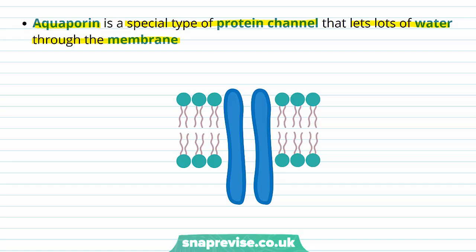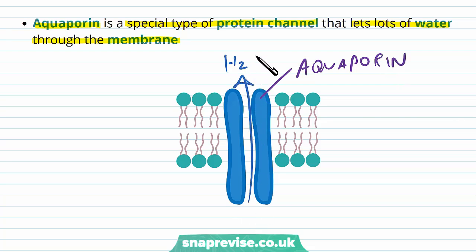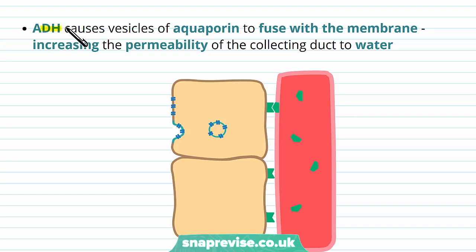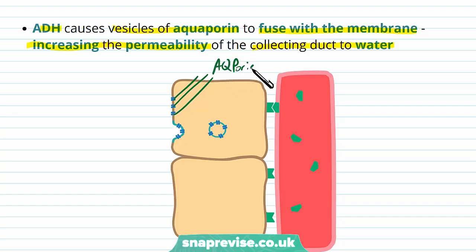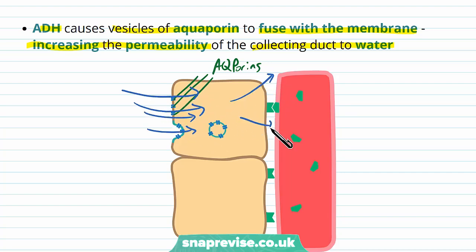Cells are normally not very permeable to water in the case of the collecting duct, so it needs these aquaporin channels to allow water to move from the duct out to the medulla. The collecting duct cell is designed to allow a lot of water to move out into the interstitial fluid. So ADH causes the vesicles of aquaporin to fuse with the apical membrane, placing these aquaporin channels into the membrane facing the tubular fluid, increasing the permeability of the duct to water, allowing water to pass from the filtrate into the cell.